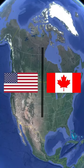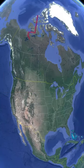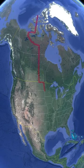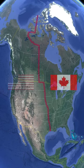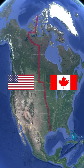What if the United States and Canada split their borders east to west? A border splitting the two may look something like this. Let's say for this video, Canada is on the east and America is on the west.